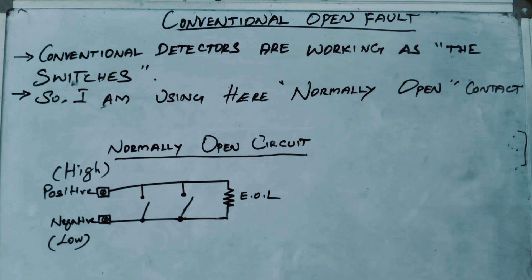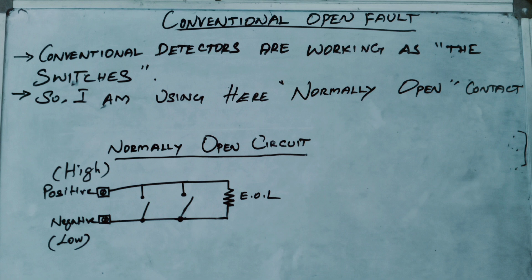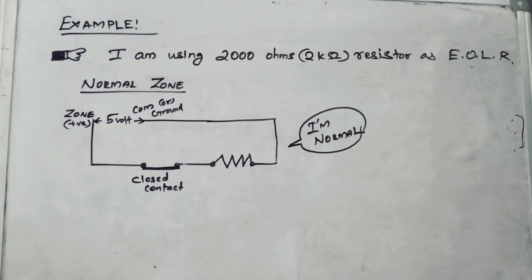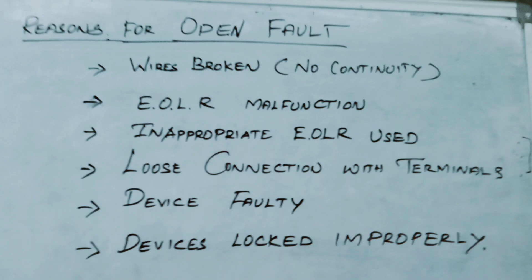Normally, conventional detectors work like switches. Here we have a normally open circuit with an end-of-line resistor. For example, I'm taking a 2 kilo-ohm resistor as the end-of-line resistor. When you measure the voltage between the zone's positive and negative wires, you get 5 volts, which means the circuit is normal with closed contact. For an open fault, you will get 12 volts between the zone's positive and negative wires, indicating an open contact.